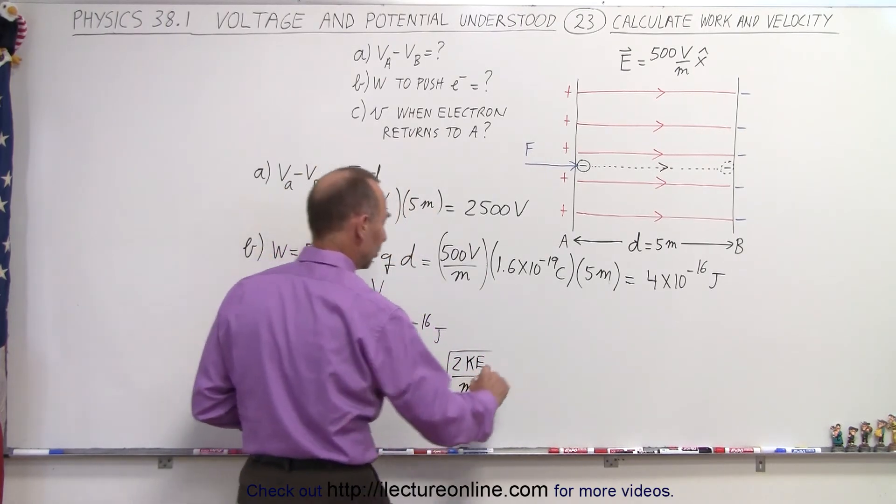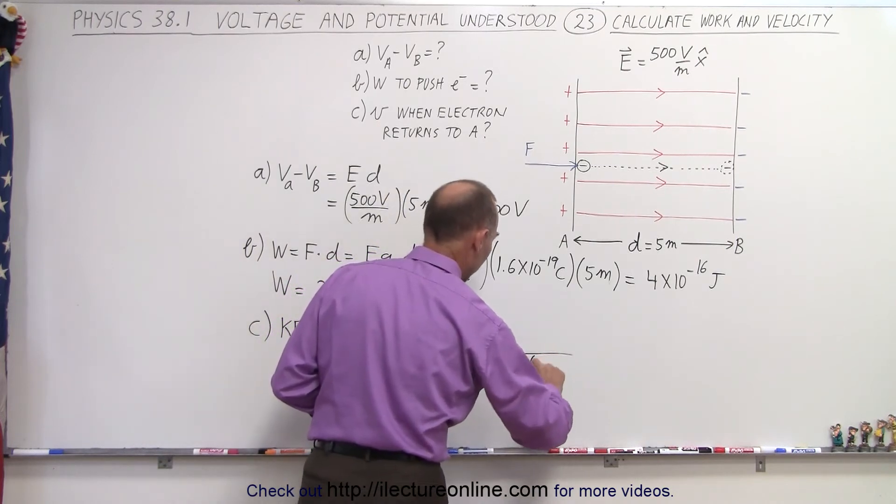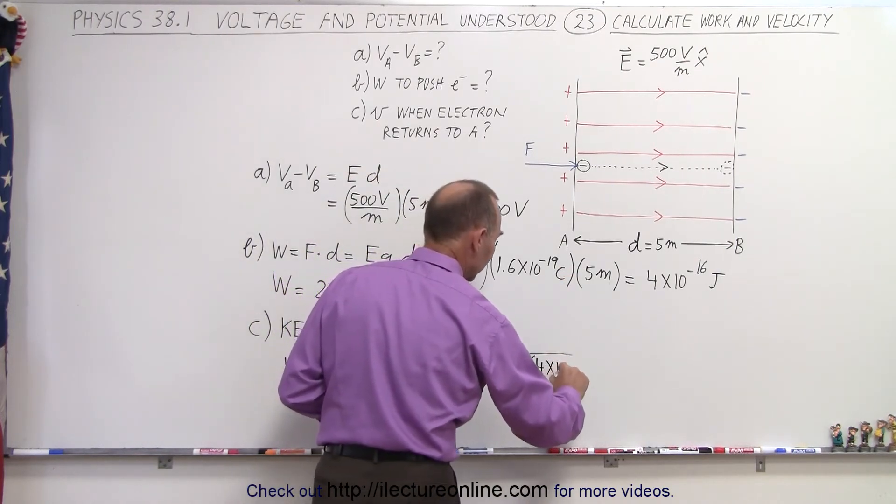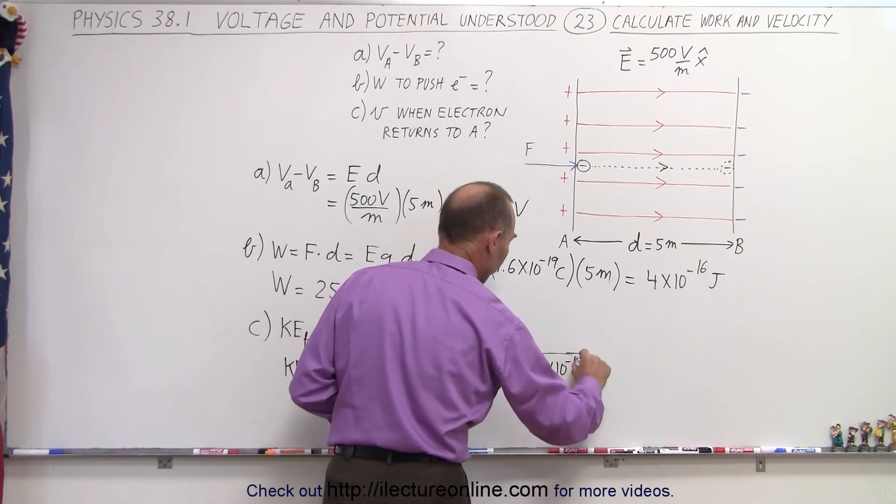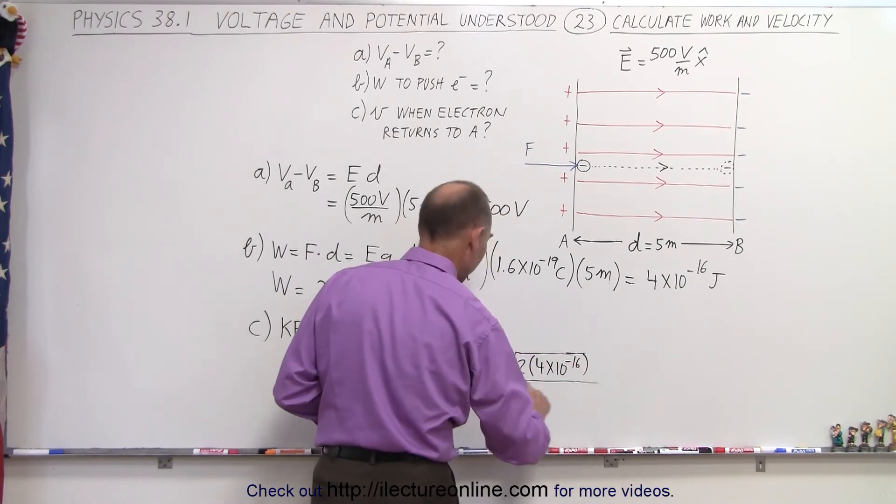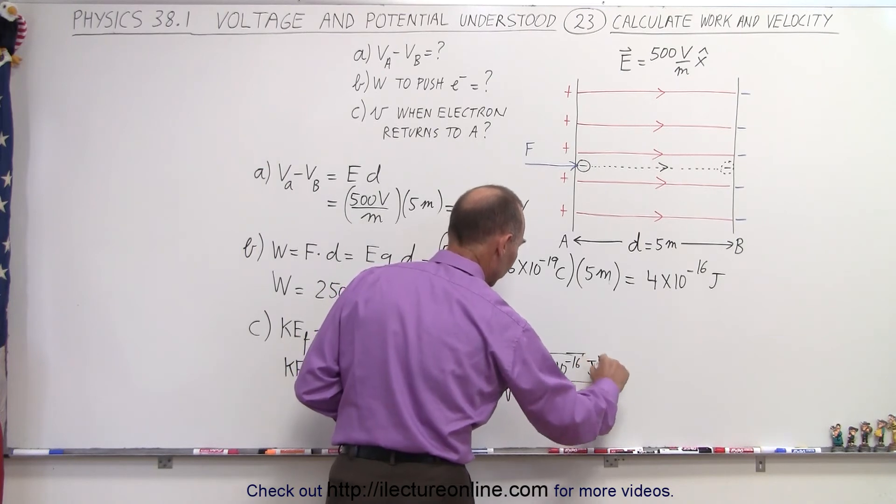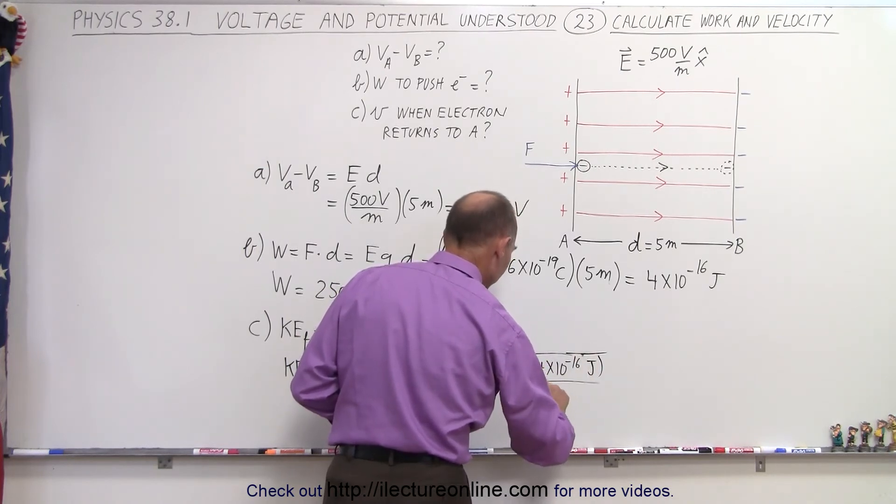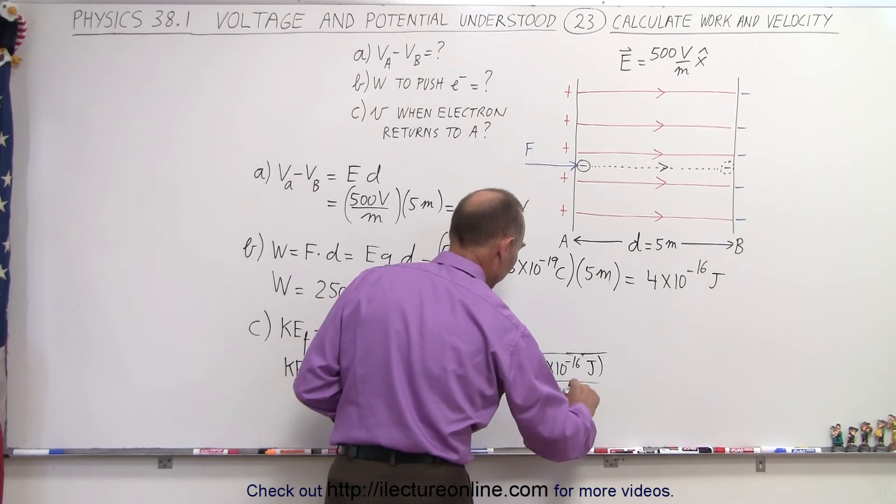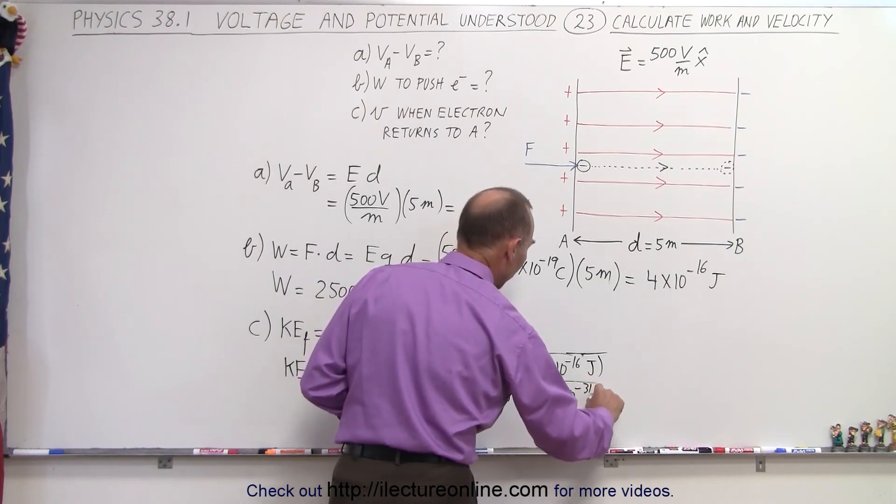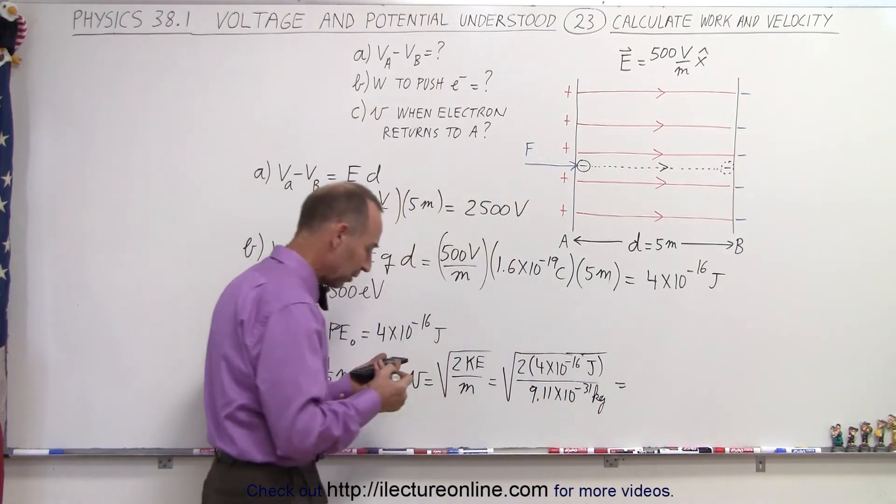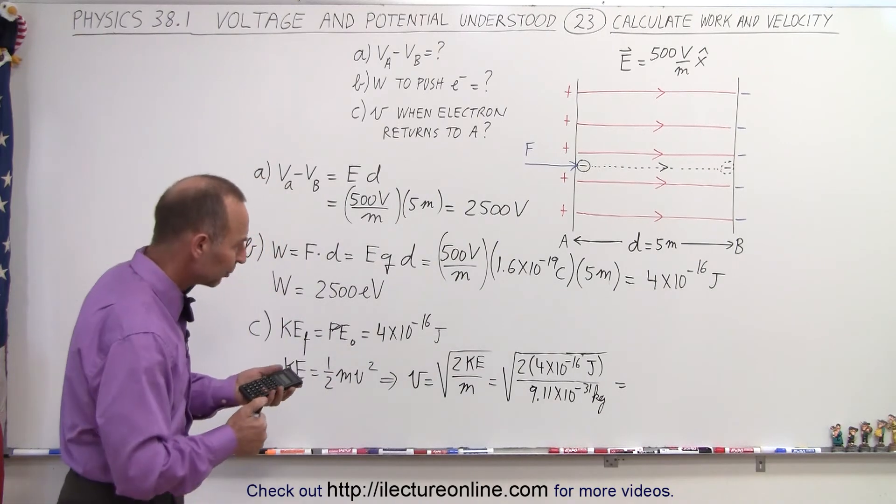Which in this case will be the square root of 2 times the kinetic energy of 4 times 10 to the minus 16 joules, all divided by the mass, which is 9.11 times 10 to the minus 31 kilograms, which is the mass of an electron. So let's figure out what that's equal to.